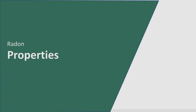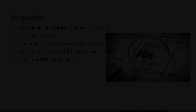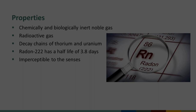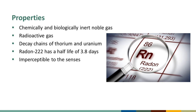Radon is a chemically and biologically inert noble gas produced when naturally occurring uranium and thorium in rock, soil, water, and air undergo radioactive decay. Radon undergoes further radioactive decay into daughters or progeny until reaching a stable form of lead. Radon 222 and its progeny will be the focus of this presentation. It has a half-life of 3.8 days and is a colorless, heavy, odorless gas that is imperceptible to the senses.